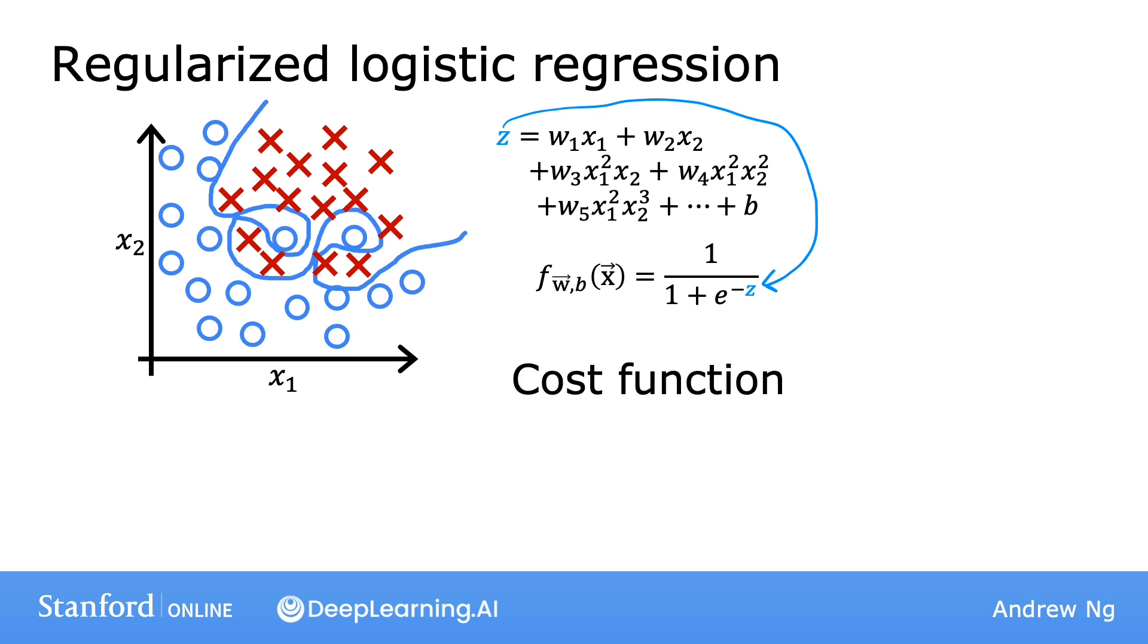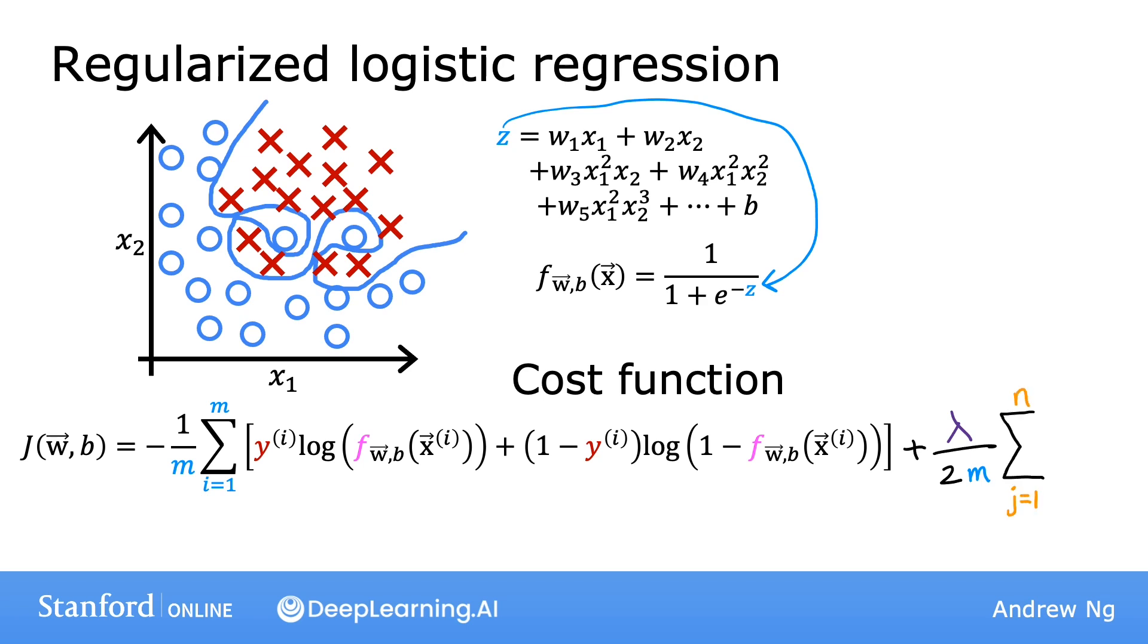This was the cost function for logistic regression. If you want to modify it to use regularization, all you need to do is add the following term: lambda, the regularization parameter, over 2m, times the sum from j equals 1 through n, where n is the number of features as usual, of wj squared. When you minimize this cost function as a function of w and b, it has the effect of penalizing parameters w1, w2 through wn and preventing them from being too large.